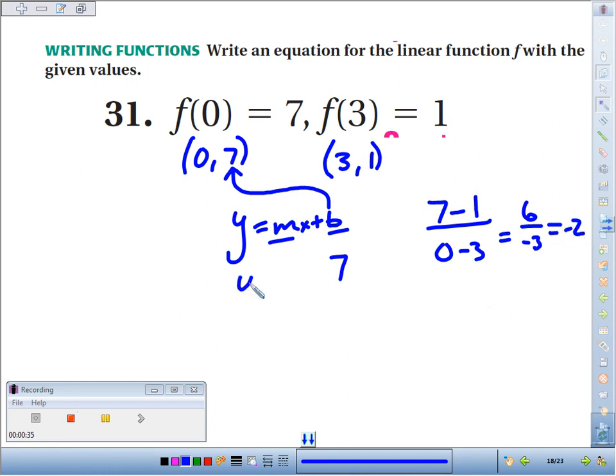So our final answer would be y equals the slope, which we just found was negative 2 times x, plus the y-intercept, which was 7.